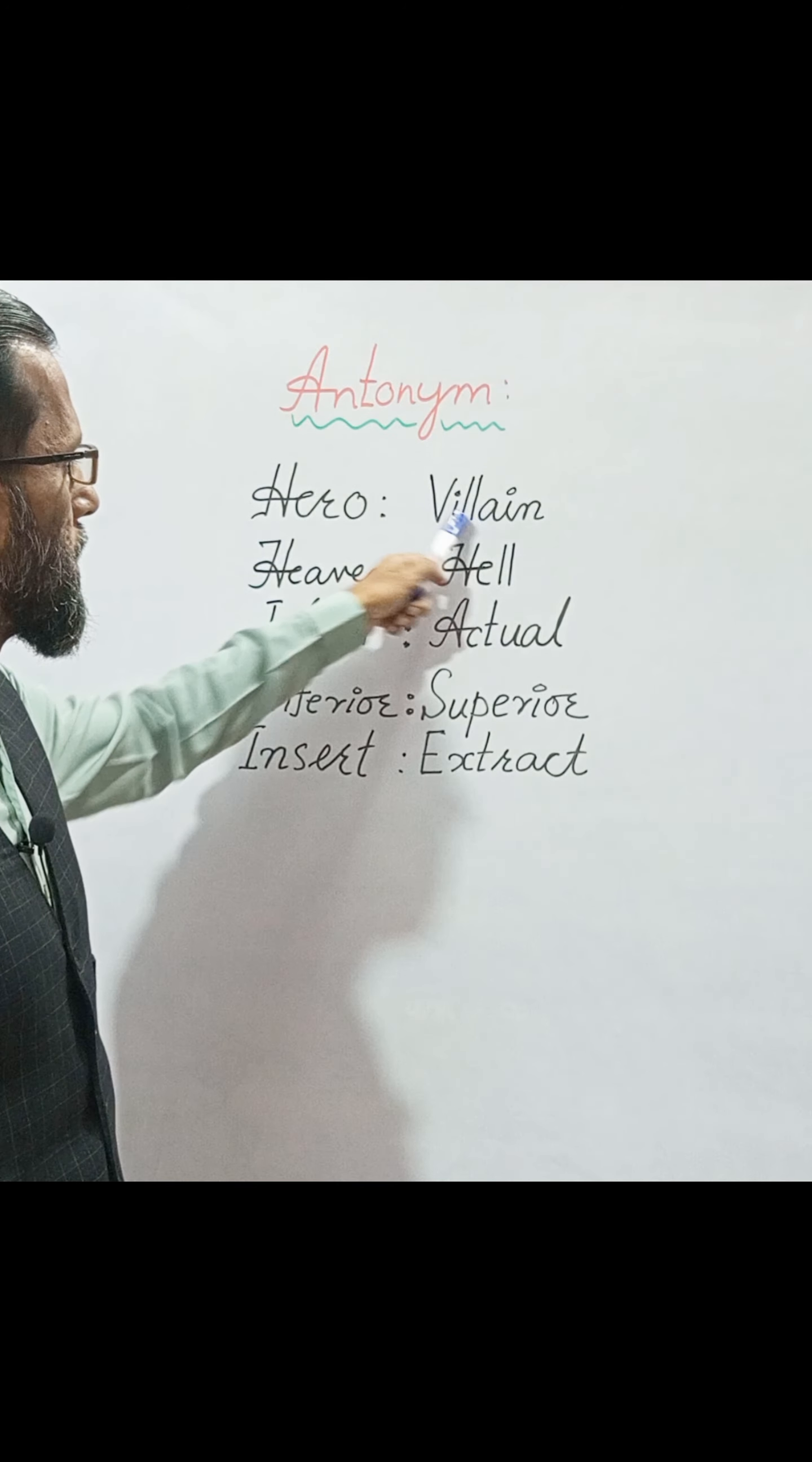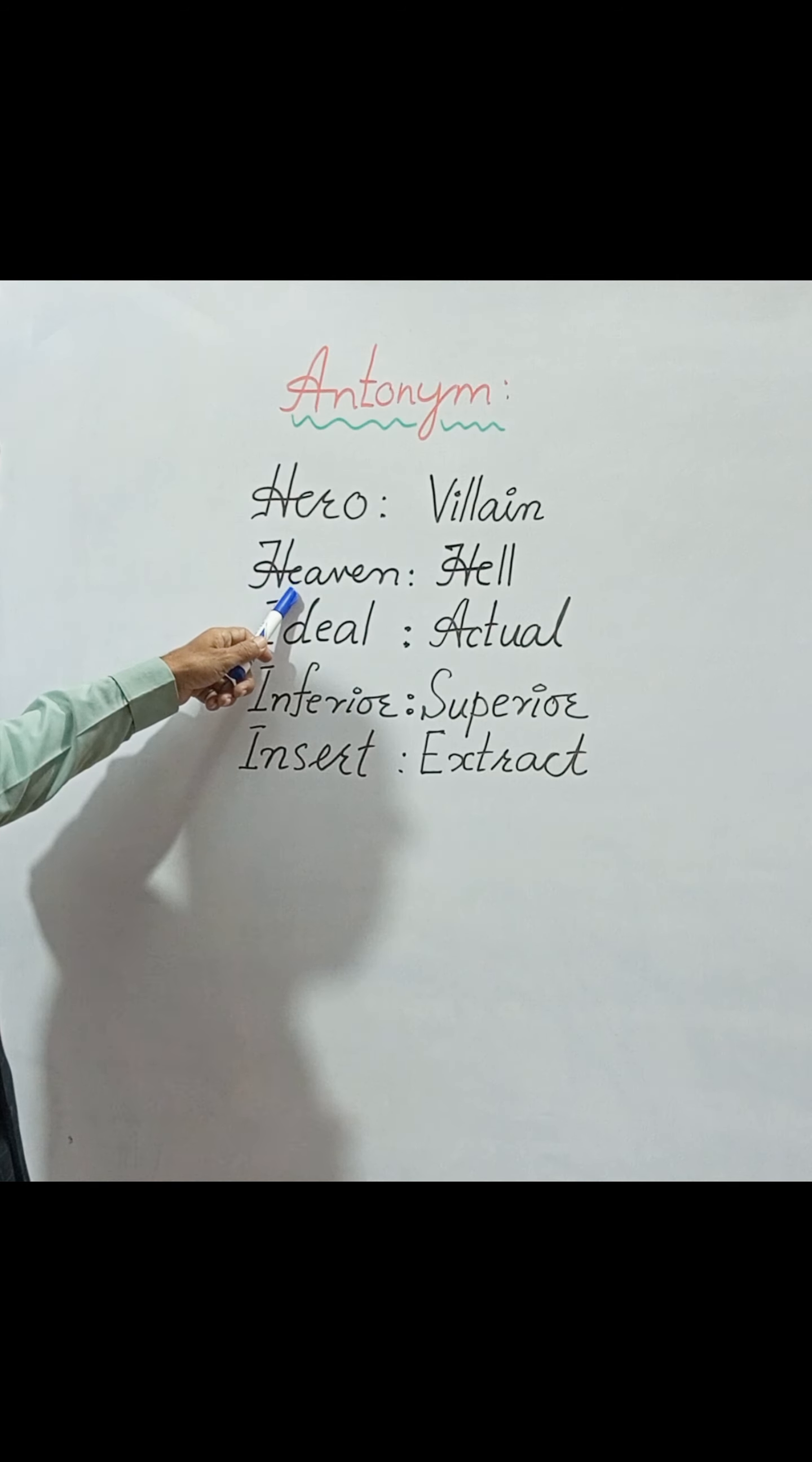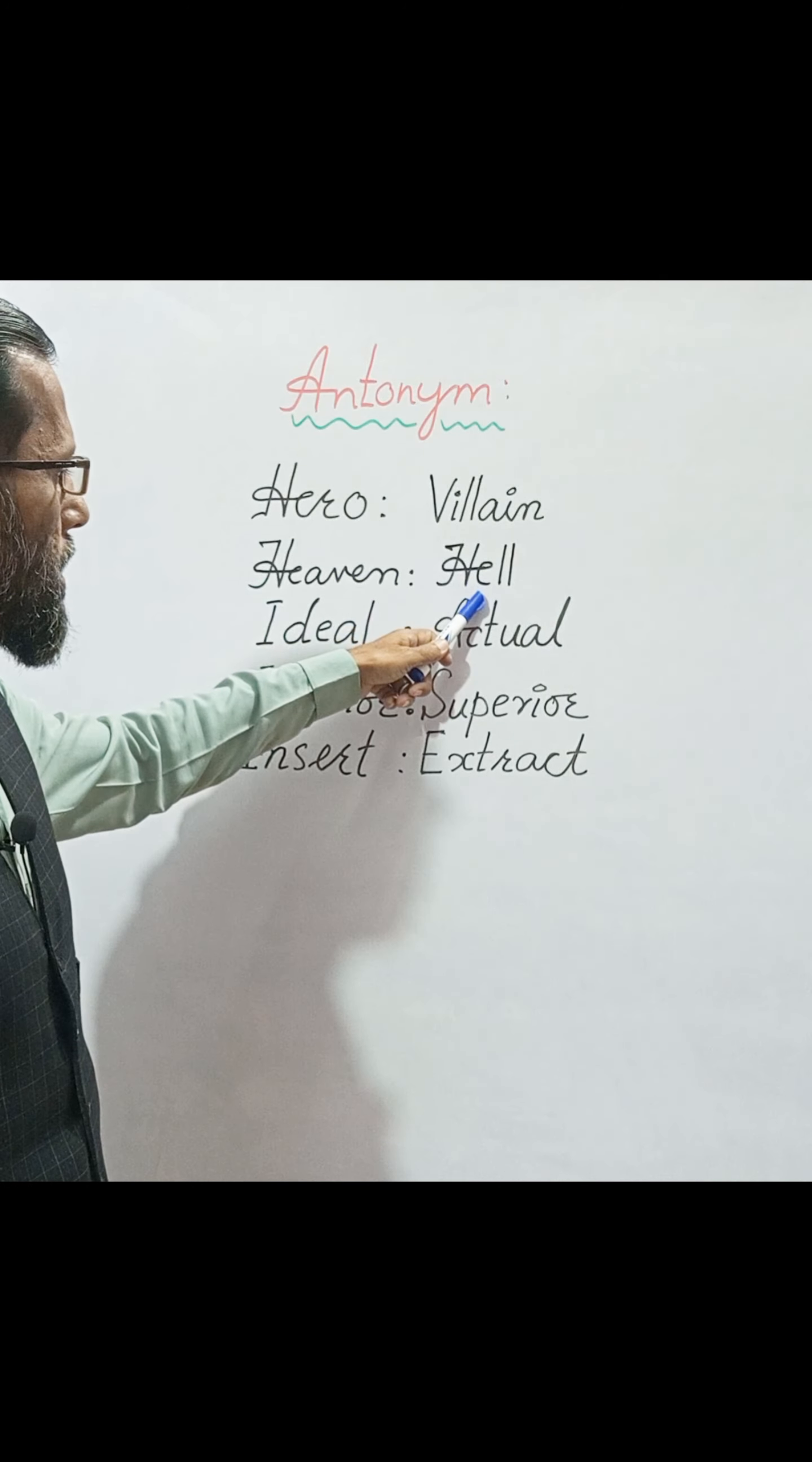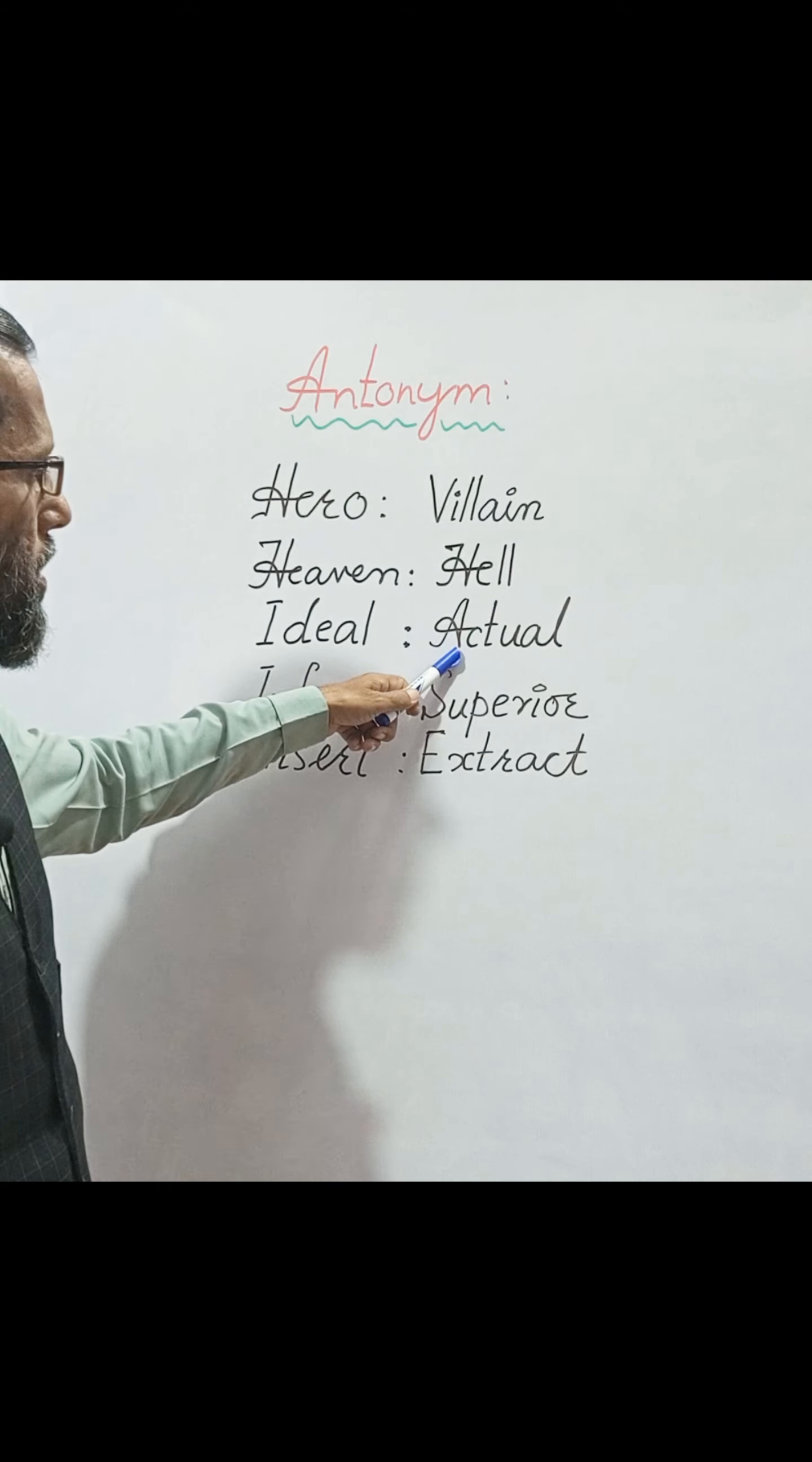Number two: heaven. And the antonym of heaven is hell. Heaven, hell. Number three: ideal. Ideal, and the antonym of ideal is actual. Ideal, actual.